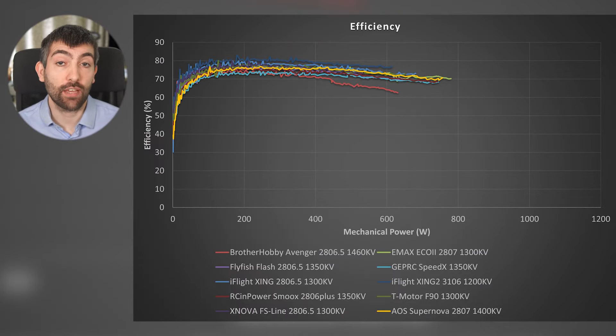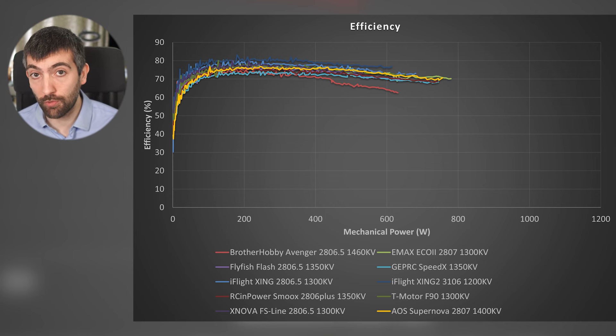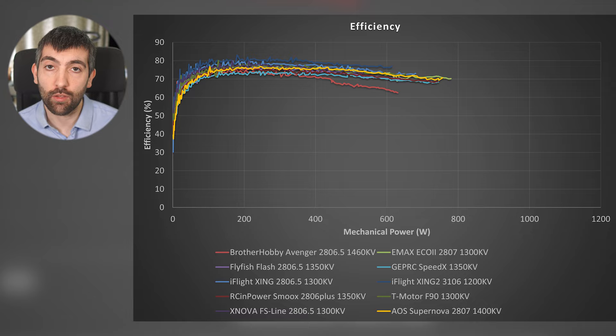Looking now to efficiency, this chart shows the efficiency of all the motors across a range of power levels. We can see that the Supernova 2807 sits somewhere in the middle of the pack at lower power levels with its relative performance in terms of efficiency improving at higher power levels. Efficiency is always a trade-off. To make a motor very efficient, you typically have to reduce its performance or increase its weight. With the Supernova, we've tried to strike the perfect balance, making a motor that has excellent performance and lightweight with good efficiency.